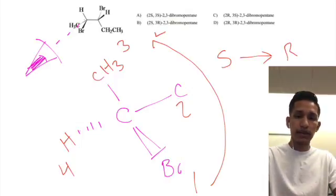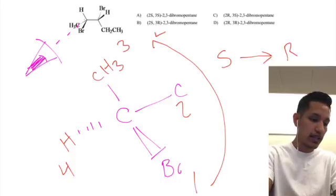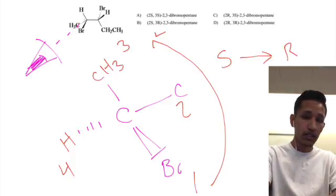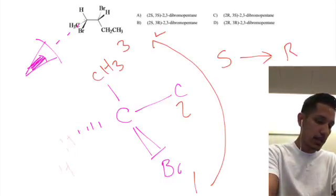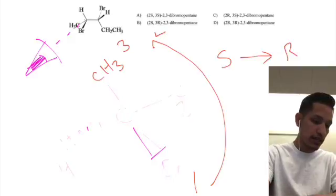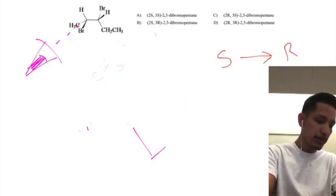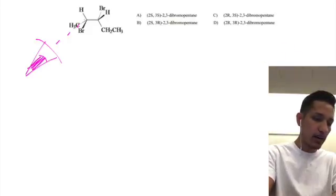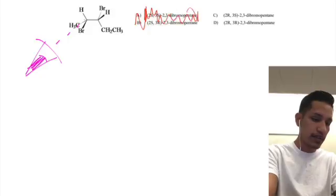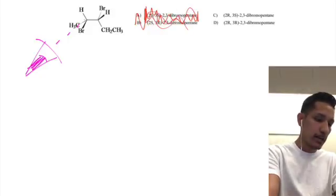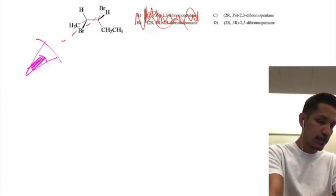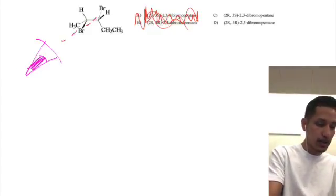That occurs any time that we do a fourth priority reversal. We've determined that our second carbon is in the R configuration. Now let's go ahead and do the third carbon, which also is going to require this technique, and we'll get some more practice with that. We're going to use our eye to look at this third chiral carbon.